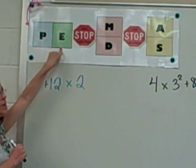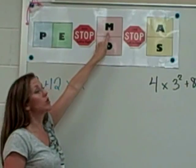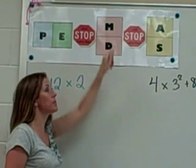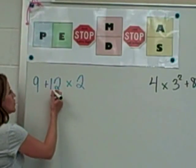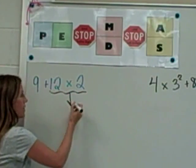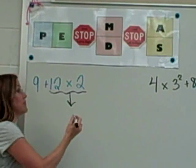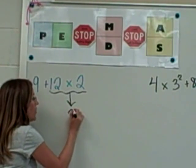Next, there aren't any exponents either. So coming on to our chart, the first thing I need to handle is the multiplication. I need to do the multiplication first. So this is the section that we're concerned with. 12 times 2. 12 times 2 is 24.